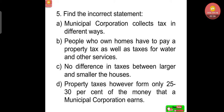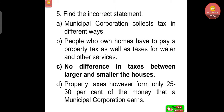Question number five: find the incorrect statement. A: municipal corporation collects tax in different ways. B: people who own homes have to pay a property tax as well as taxes for water and other services. C: no difference in taxes between larger and smaller houses. D: property taxes form only 20 to 30 percent of the money that a municipal corporation earns. Answer: C is incorrect, because there is a difference in taxes between larger and smaller houses.